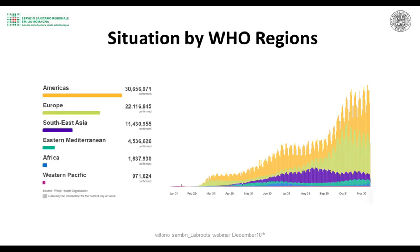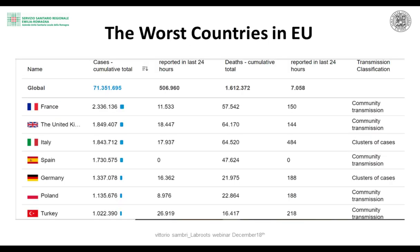More than 1,600,000 people have died according to WHO data for COVID-19 — an impressive and sobering toll. Moving to European countries, we have cumulative cases for each country with more than 2 million cases in France, and about the same number in the UK and Italy, followed closely by Spain, with lower numbers in Germany, Poland, and Turkey.